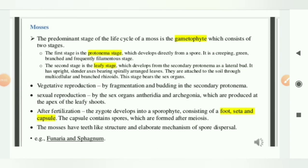Next is mosses. What happens in mosses? It is an example of bryophytes. The predominant stage of the life cycle of a moss is the gametophyte, and this gametophyte consists of two stages: one is your protonema stage and second is your leafy stage. What happens in your protonema stage? It develops from spores. It is a creeping green branched and frequently filamentous stage. And in case of your second stage, what happens? It will develop into secondary protonema as a lateral bud, and it has upright slender axis which bear leaves.